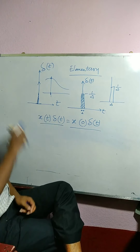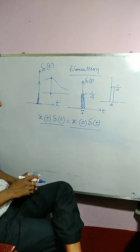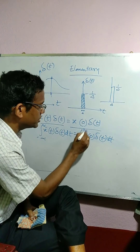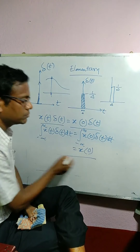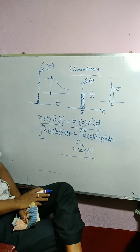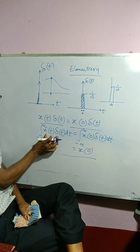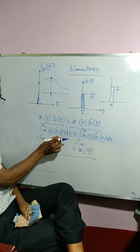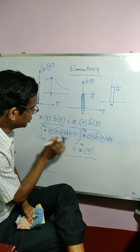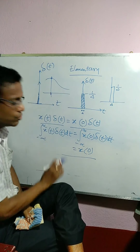Another two important properties of delta(t) impulse: now if we integrate both sides, we get the integral of x(t) into delta(t) dt equals the integral of x(0) delta(t) dt, from minus infinity to plus infinity. What will we get? We will get x(0). That means, if you consider the area represented by the integration of a multiplication of two signals — one signal is x(t) and delta(t) — it is nothing but the value of the signal at t equals to 0.